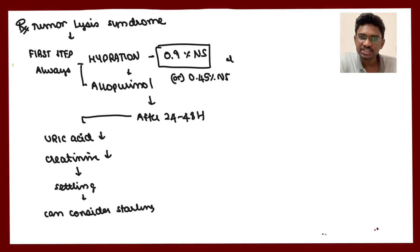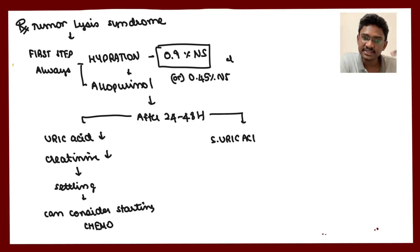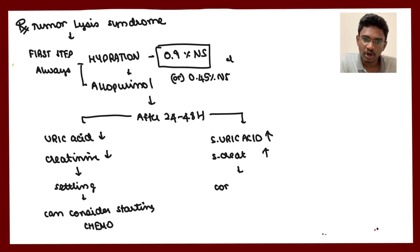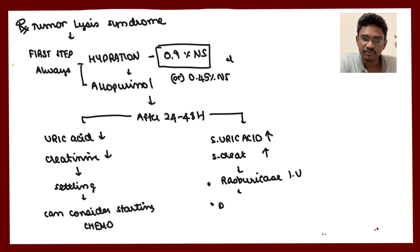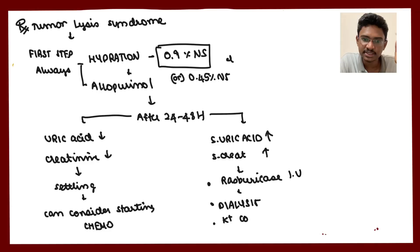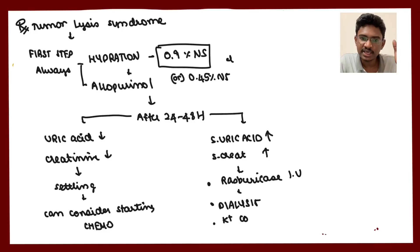If uric acid and potassium come to a safe range after hydration, chemotherapy can be reconsidered. If they do not stabilize, hemodialysis should be started immediately along with rasburicase (urate oxidase enzyme) to decrease uric acid levels. The initial step in management is always hydration.